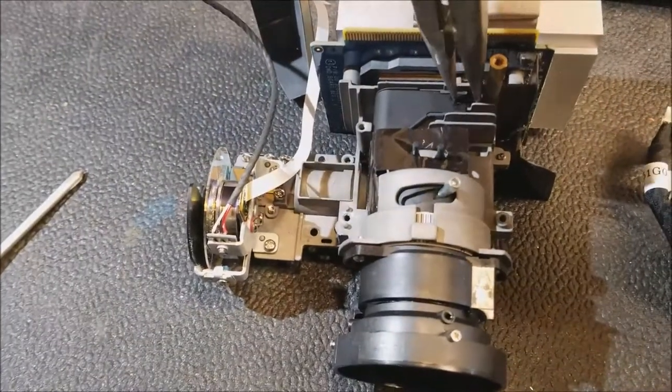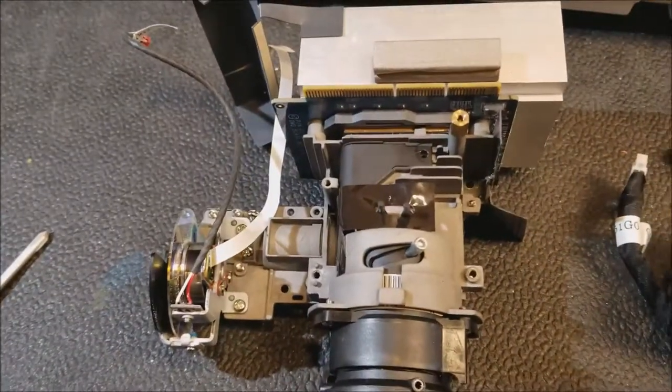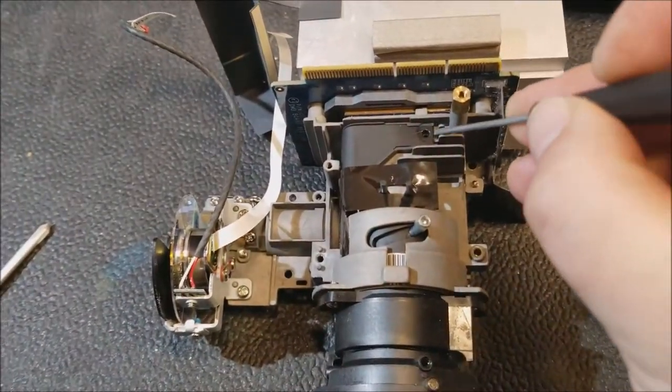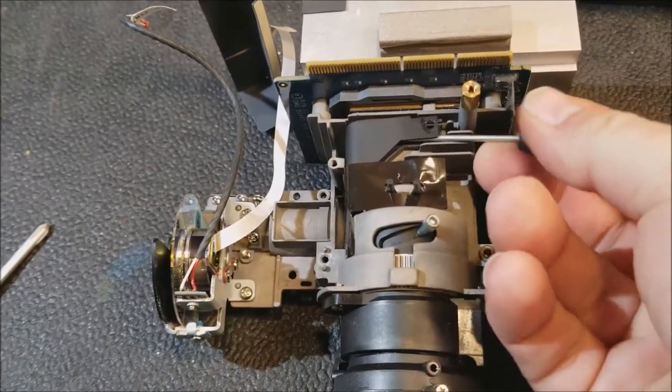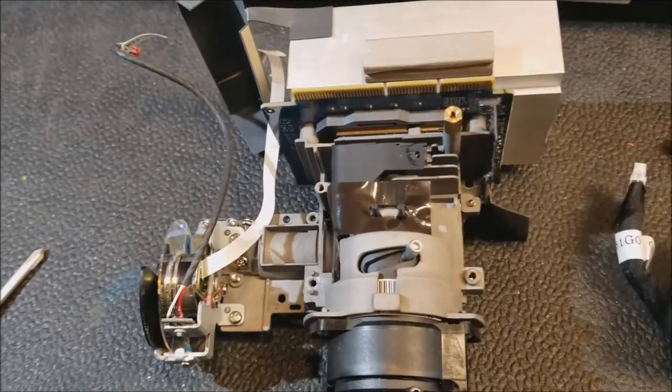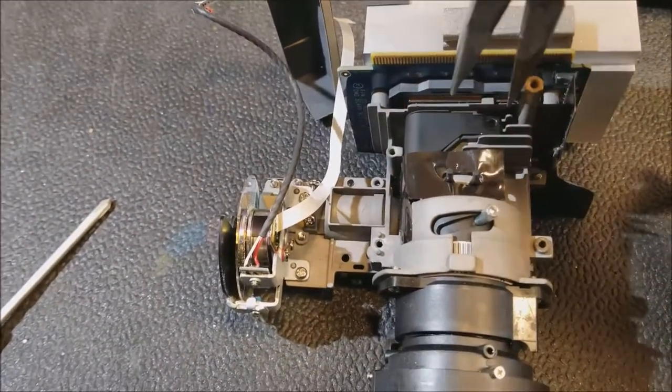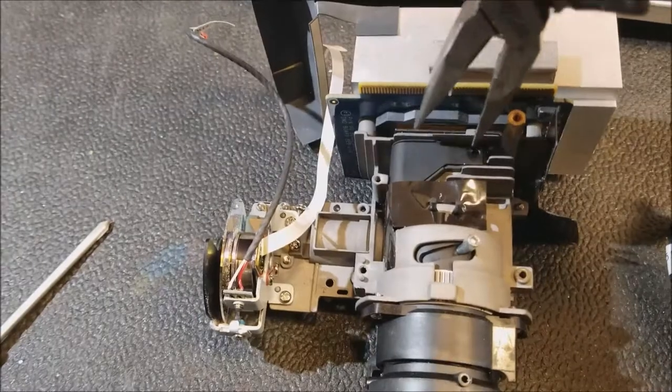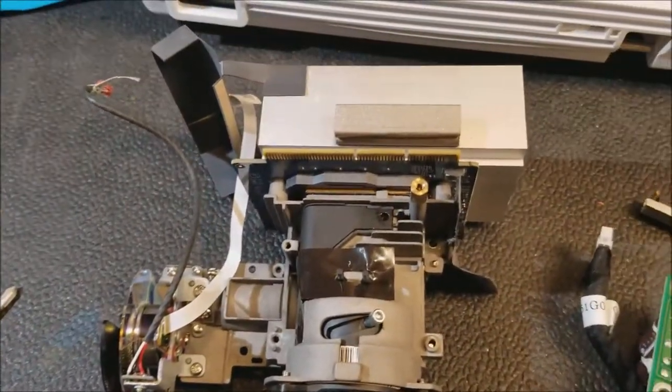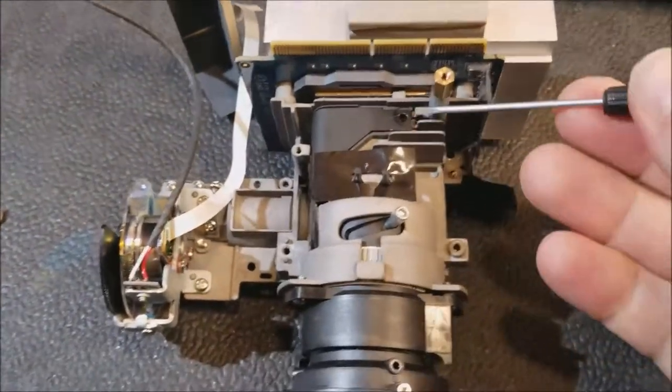And then this metal cover. I think it's metal. It might be plastic. Yeah, it's metal. This cover just kind of lifts out and it exposes the internals where the DLP chip and projection lens are.